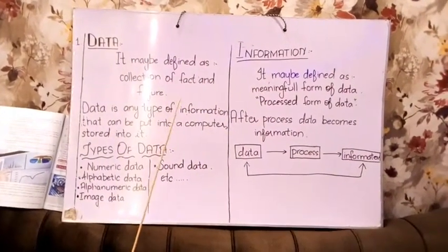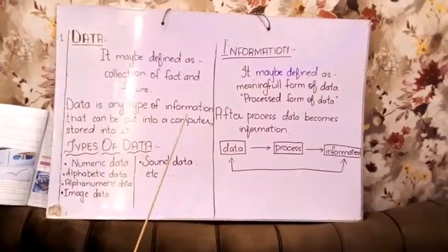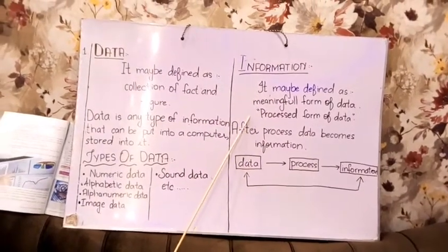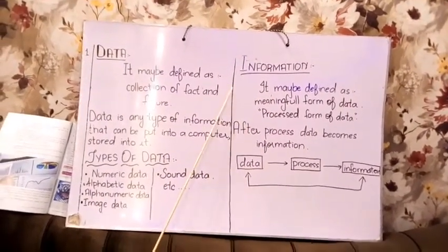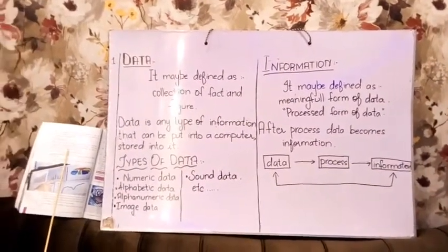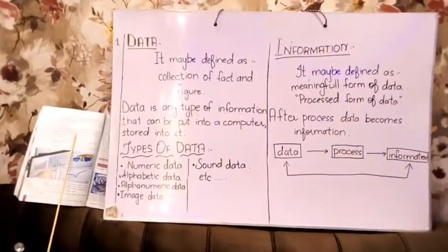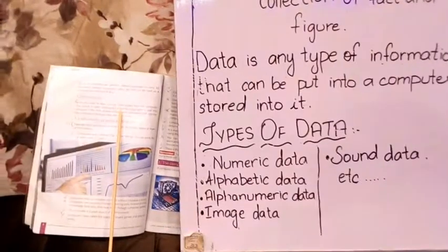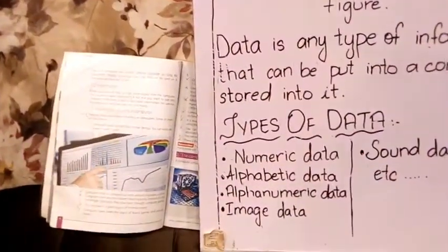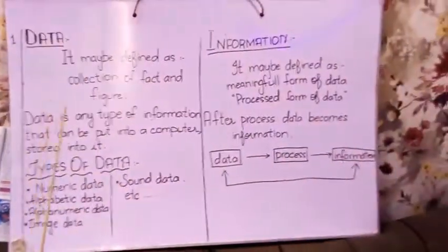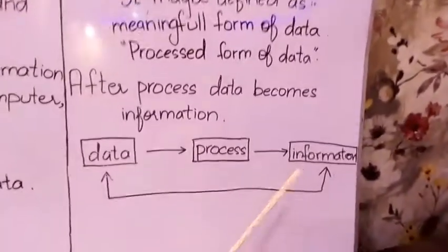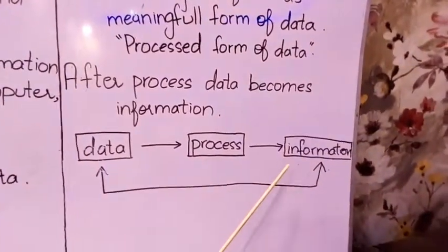What is information? It may be defined as the meaningful form of data, or the processed form of data. Data is called information when you work on data and get some output from the computer. This output is called information. So, after data is processed, it becomes information.